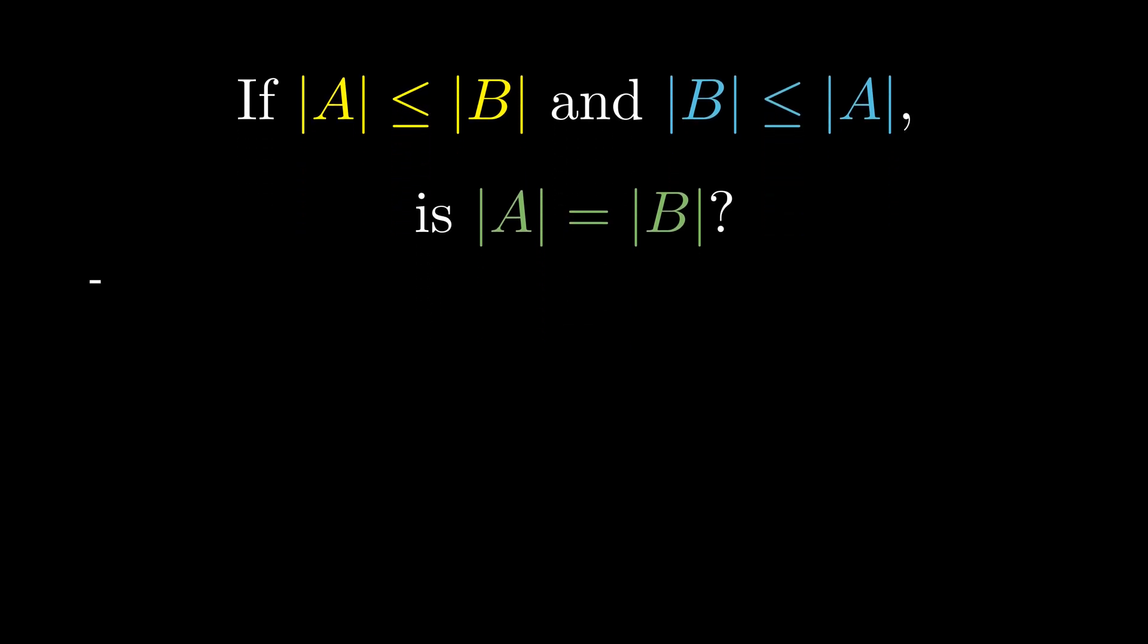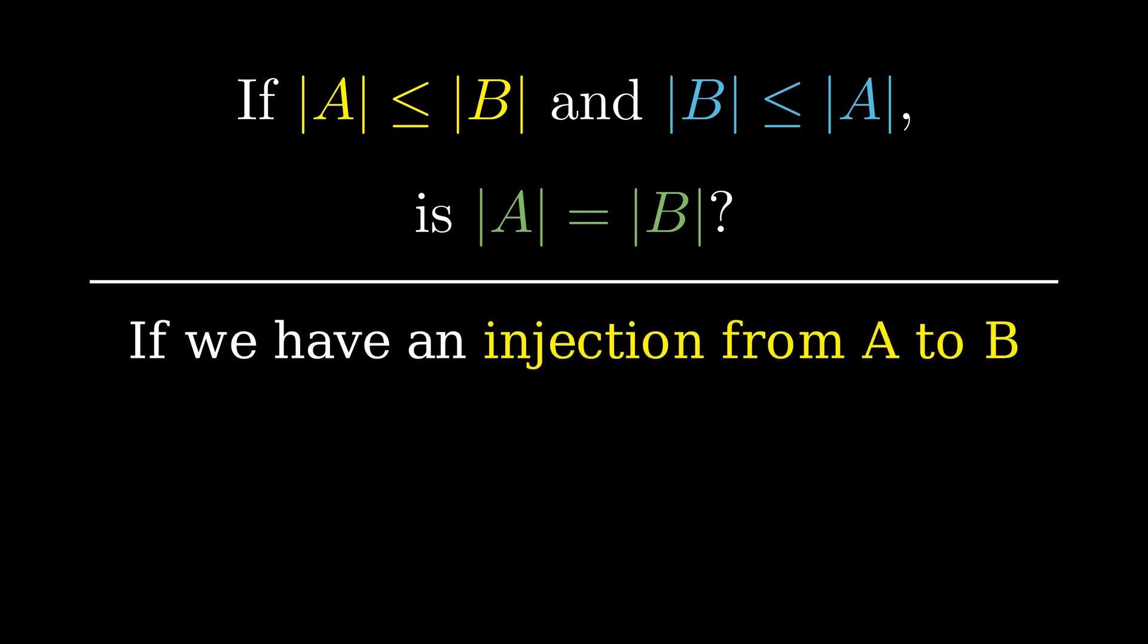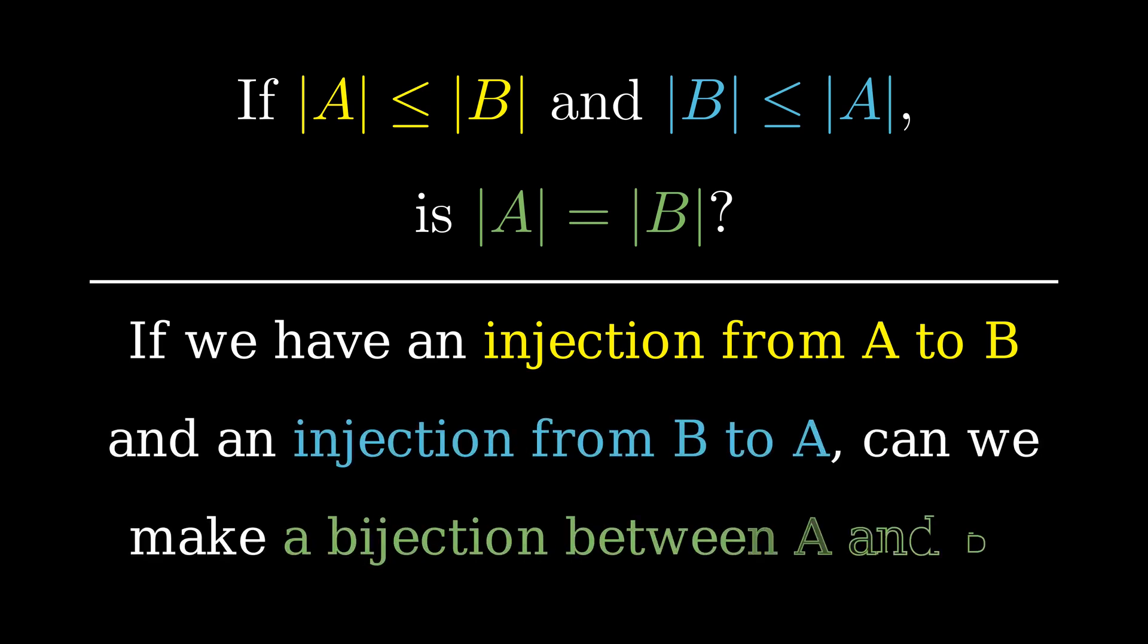This definition lets us finally go back to the question we posed at the very start of the video. If the size of A is less than or equal to the size of B, and the size of B is less than or equal to the size of A, can we say their sizes are the same? Let's translate this into the language of injections and bijections. What we're asking here is really, if there is an injection from A to B, and an injection from B to A, can we find a bijection between A and B? With this phrasing of the question, we start to see why this isn't as obvious as the original statement made it seem.